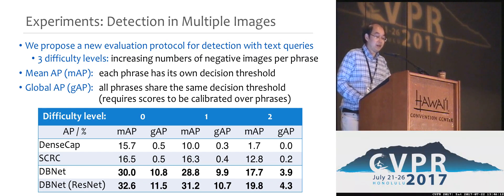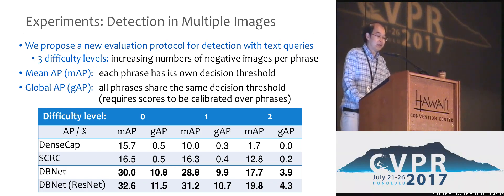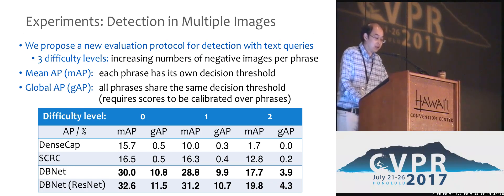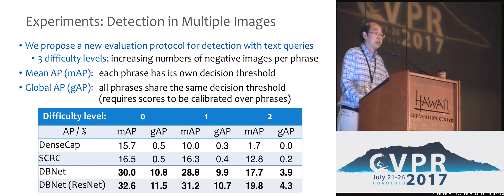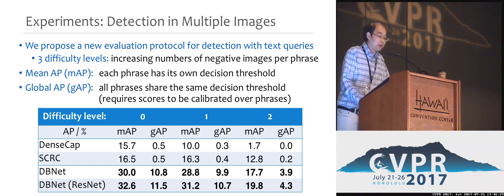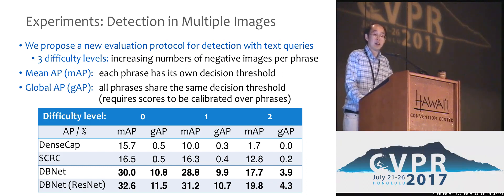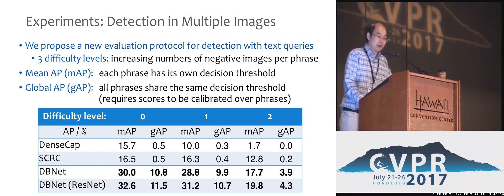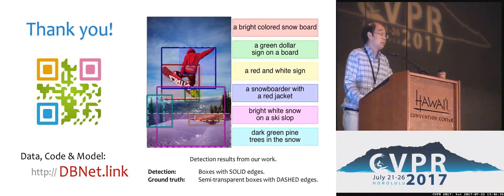The superior performance of DBNET demonstrates the importance of discriminative modeling and training. The significant performance difference in global average precision also indicates that the detection scores of DBNET are more calibrated over different text phrases. If you are interested in this work, please check out our poster and visit our webpage. Thank you very much for your attention.